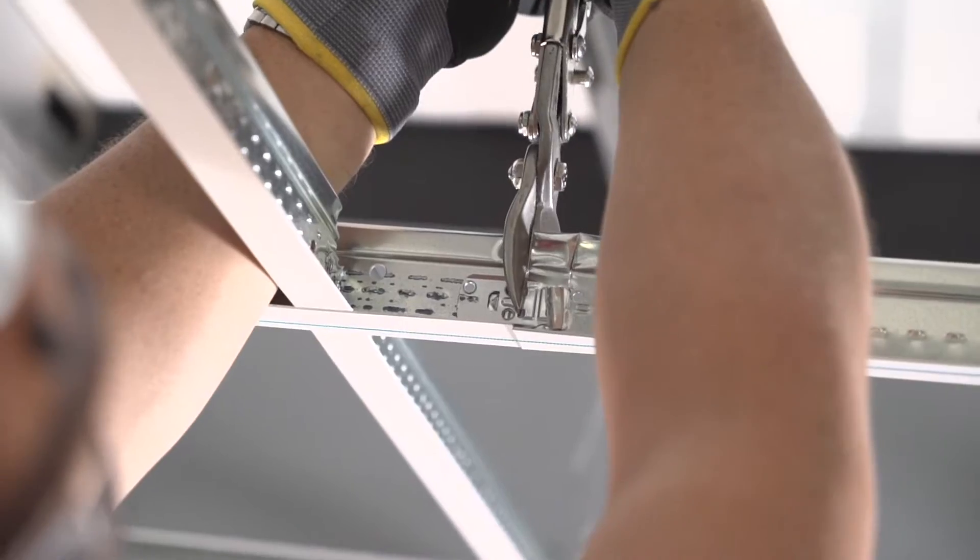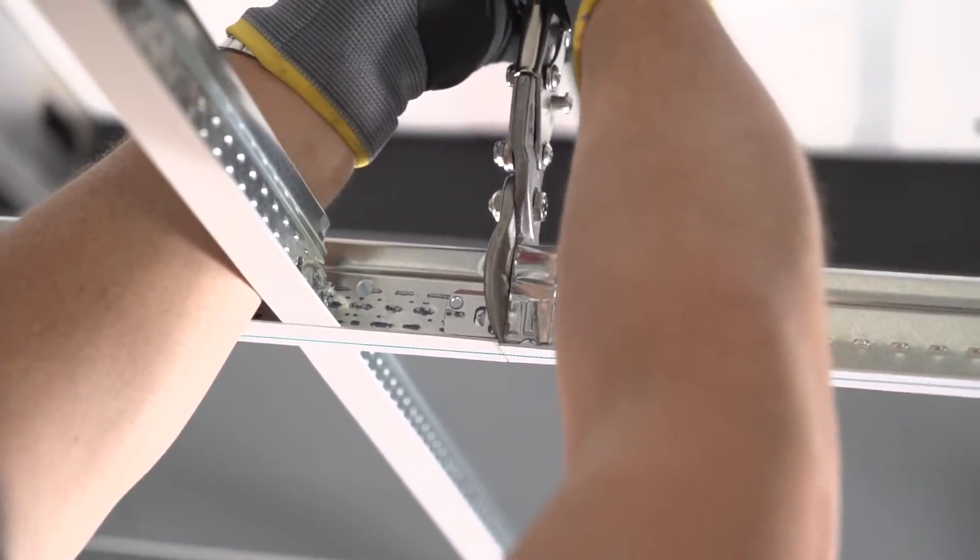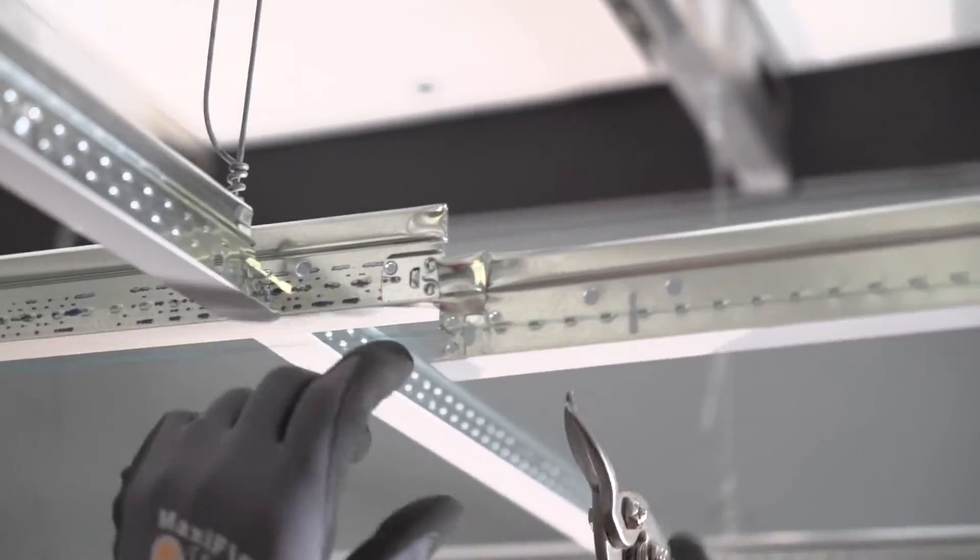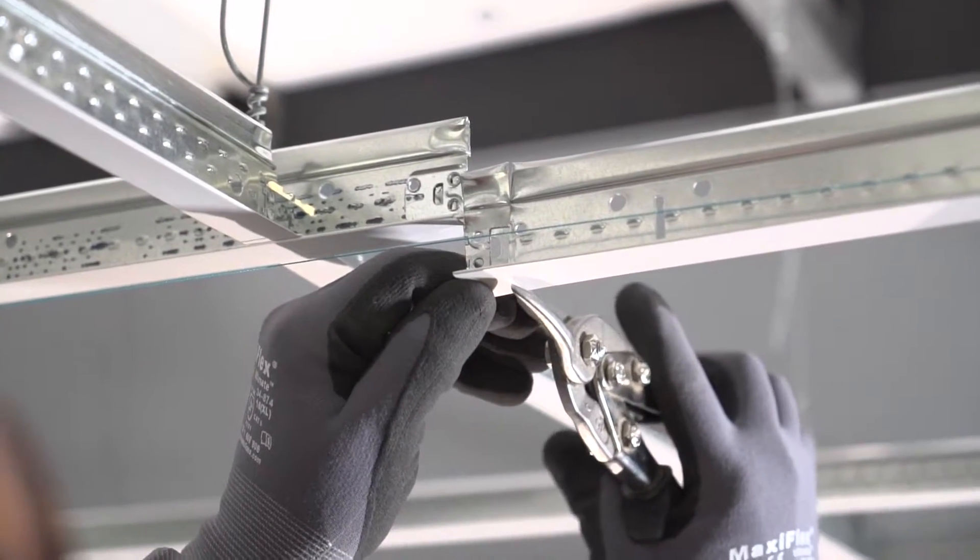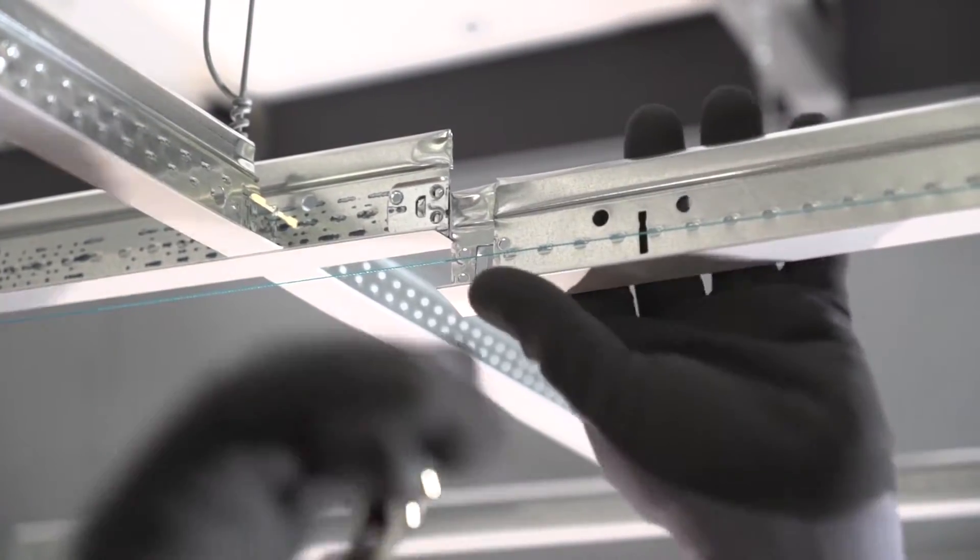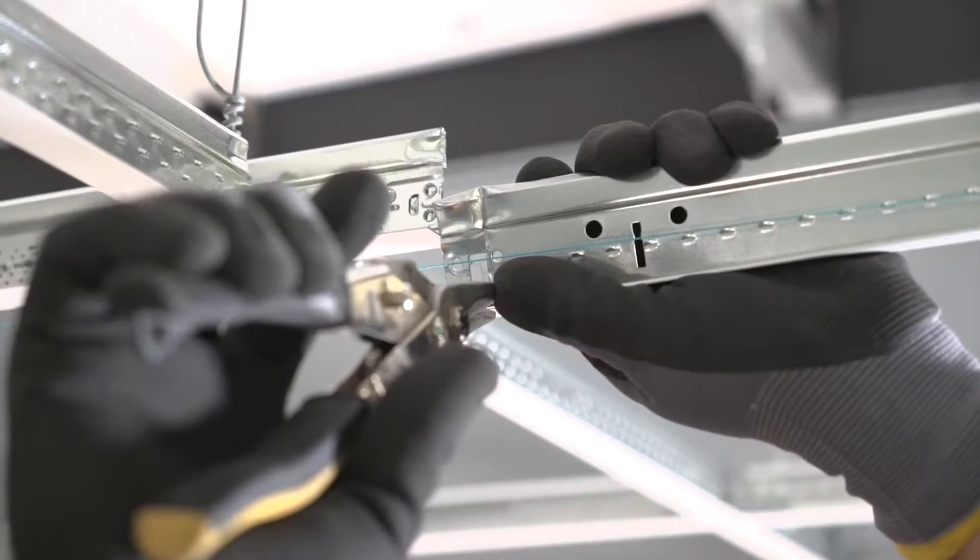You only want to cut out your grid after you have braced with compression posts every 144 square feet. This will keep your grid square as you cut it out for your seismic separation joints.